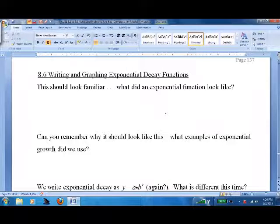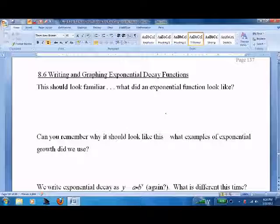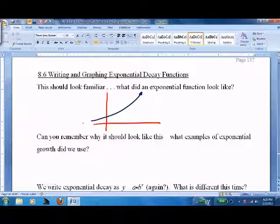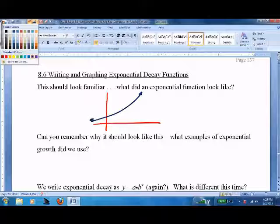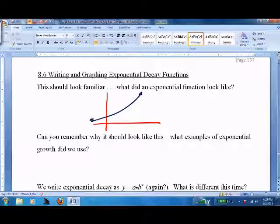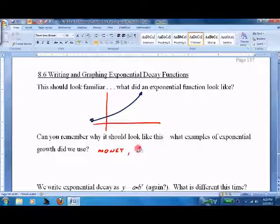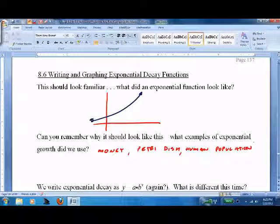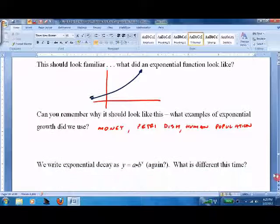Lesson 8.6: Writing and Graphing Exponential Decay Functions. This looks familiar. We just did exponential growth functions, which get bigger and bigger. What are some examples of exponential growth? Well, money in the bank keeps growing faster and faster. You've got your classic petri dish with amoeba - the more amoeba there are, the more that grow. Human population or any population is typically exponential growth. The more people there are, the more babies they have, and so on. Now we're looking at the opposite: exponential decay.